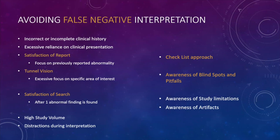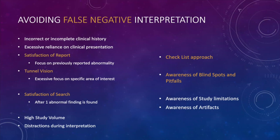So what are the solutions? One basic approach is the checklist method, commonly employed in critical fields — airplane pilots go through a checklist to make sure nothing is forgotten. Since we are dealing with healthcare, which is also a critical field, a checklist is a good approach. Even though it's a brain study, the checklist will include looking at orbits and parotid glands — going through the commonly missed areas. In general, just simple awareness that blind spots exist and that there are pitfalls in imaging already makes it less likely we'll miss things.